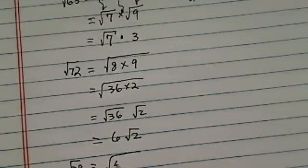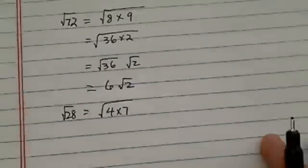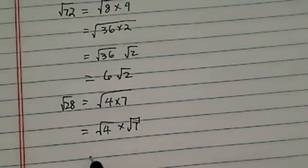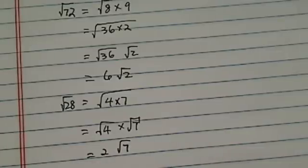Radical 28 is 4 times 7, and then 4 is a perfect square, and that's 2 radical 7.